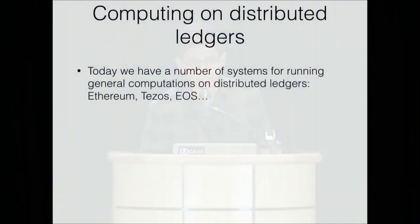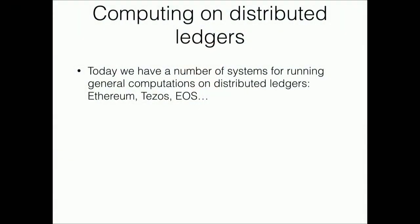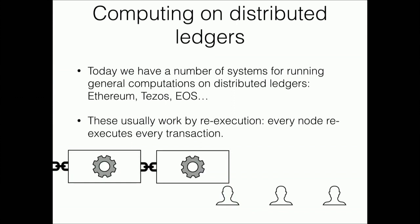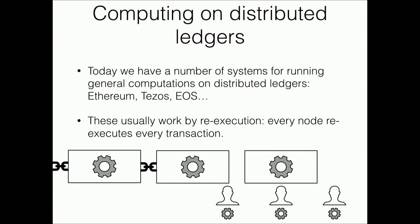Today, if users want to conduct general computations on distributed ledgers, they have a number of options, such as Ethereum, Tezos, EOS. The common factor amongst all of these systems is that they usually work by re-execution — when there's a transaction broadcast to the network, every node has to re-execute the computation inside the transaction and ensure the results match before the transaction can be appended to the ledger.